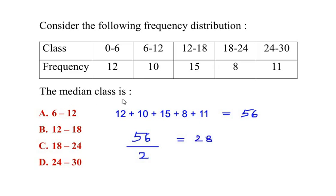Now to find out the median class, we will again start adding the frequencies till we reach 28 or greater than 28. Remember we have to get greater than or equal to 28 when we are adding the frequencies one by one.